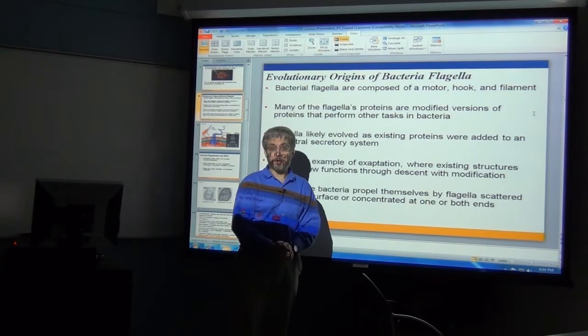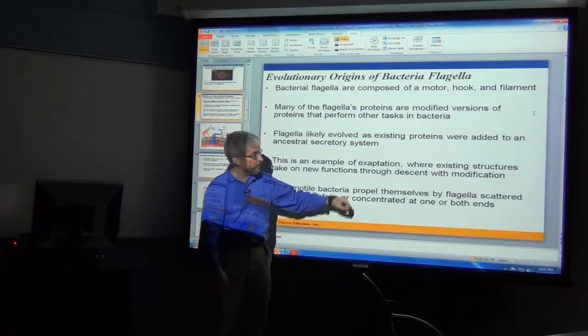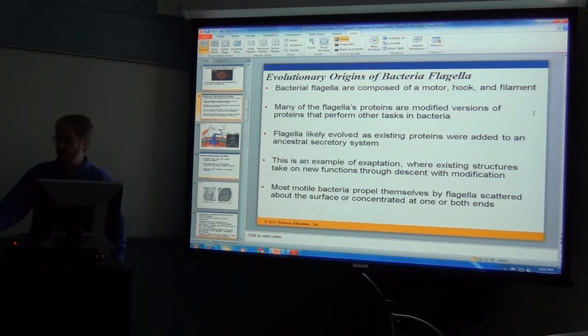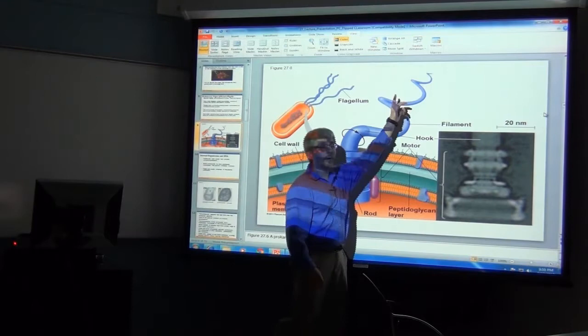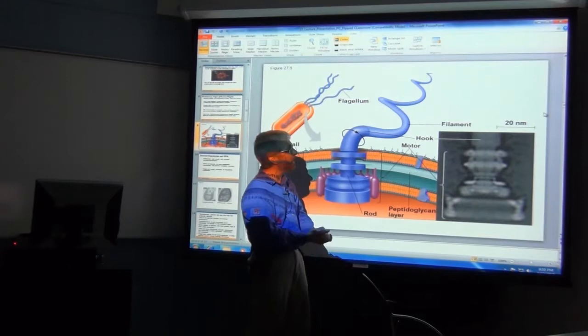The flagella can be scattered or clustered in a little group, allowing locomotion. The motor is a large structure, the hook embeds near the plasma membrane, and the filament is the hair-like projection. It's analogous in function to the eukaryotic cilium or flagellum but not in design. So make sure you separate eukaryotic from prokaryotic structures.